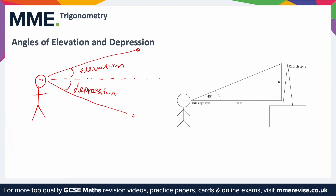These angles can be used to calculate the height and distance of objects. For example, this is Bill — he's 30 meters away from a church. When he looks at the top of the church spire, the angle of elevation is 45 degrees, and we know that Bill's eye level is 1.5 meters above the ground. So, how tall is the church spire?